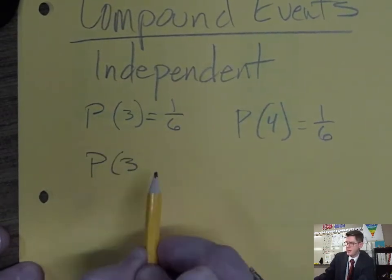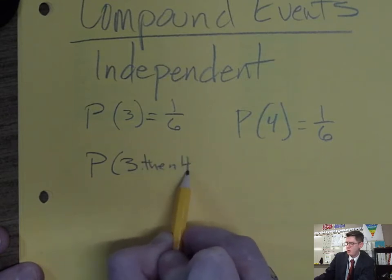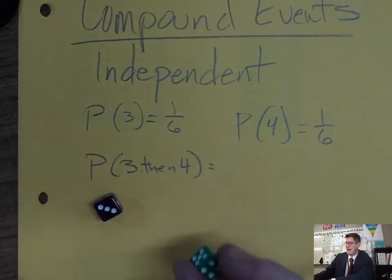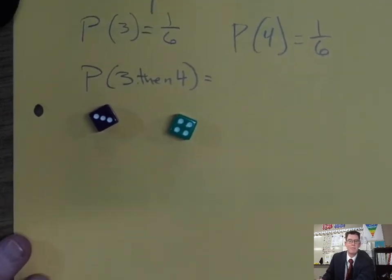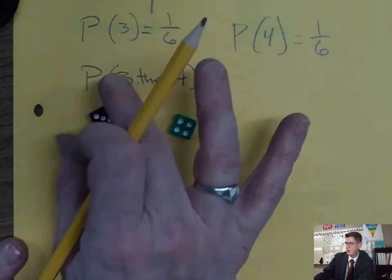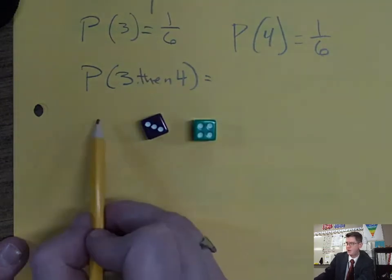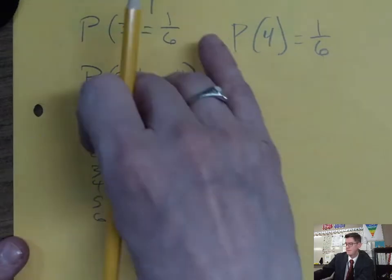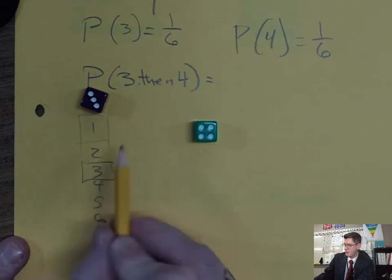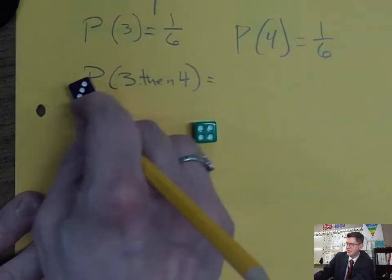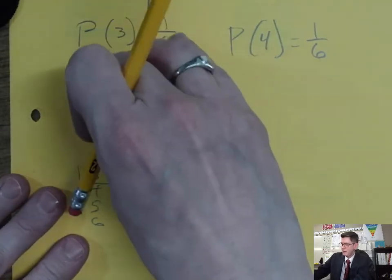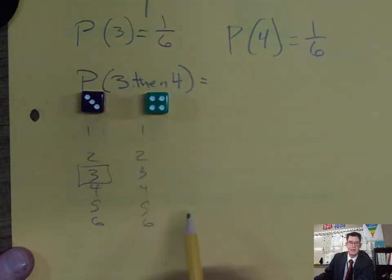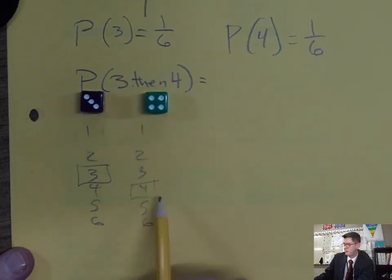So the question is: what if I rolled a three on this die and then a four on that die? Well, there's a real easy step to doing it, but I want to explain why the answer is what it's going to be. On this first die I could roll a one, two, three, four, five, or six. And then on this second die — I'll put it on the three since that's what I'm going for — on the second die you can also roll a one, two, three, four, five, or six.